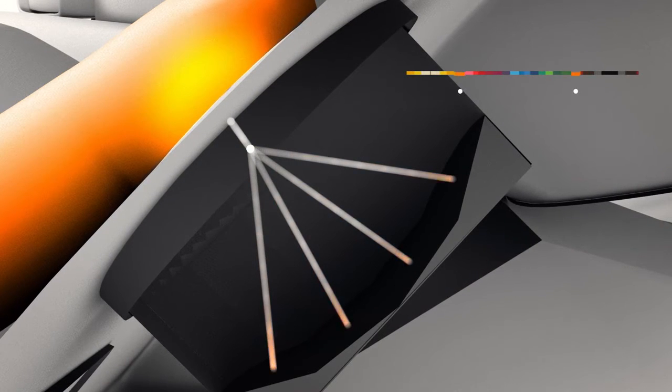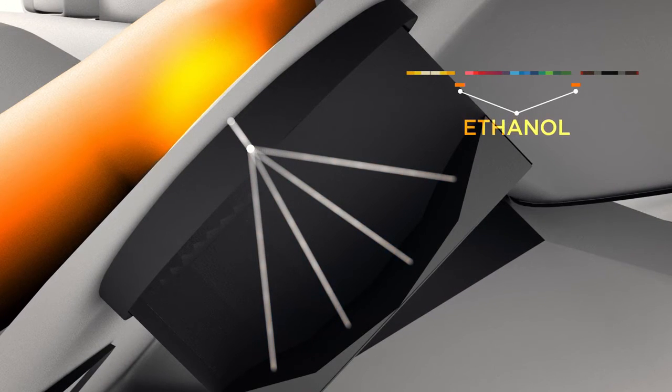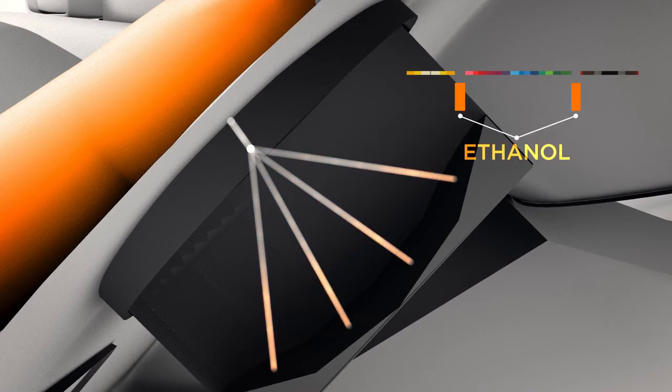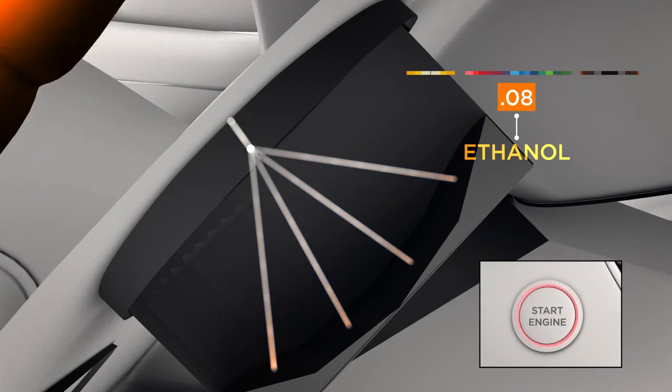Alcohol absorbs specific wavelengths of light. By measuring the light's intensity, the system can precisely pinpoint the driver's blood alcohol level.